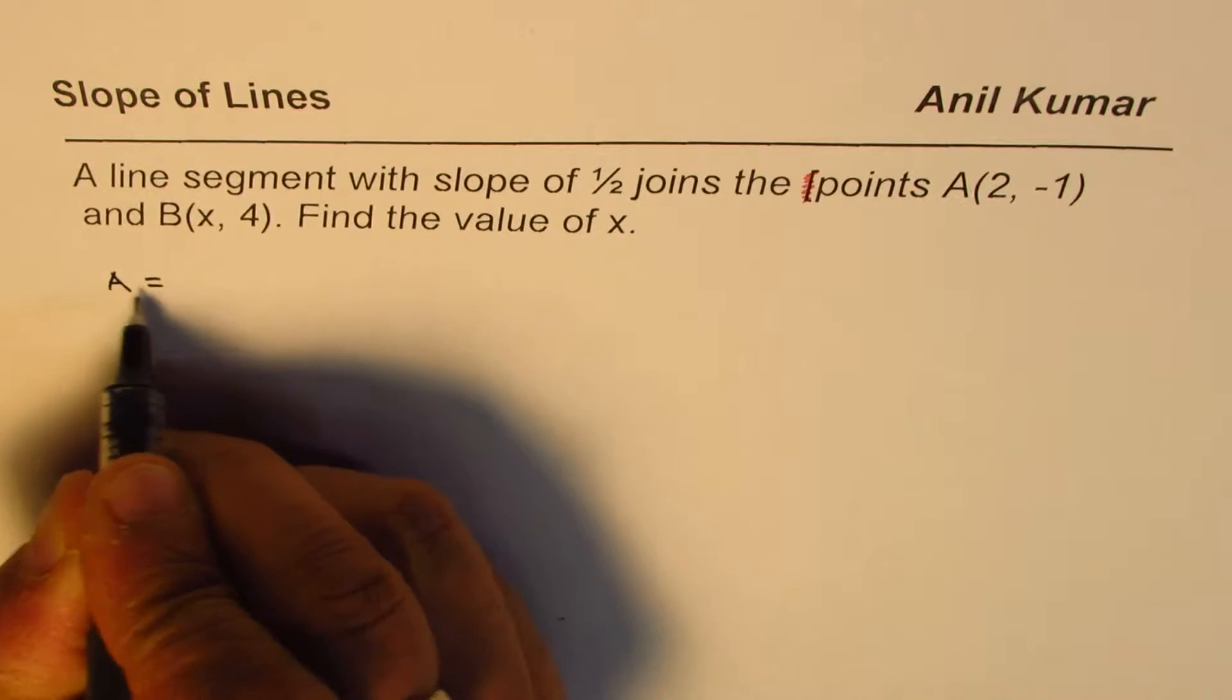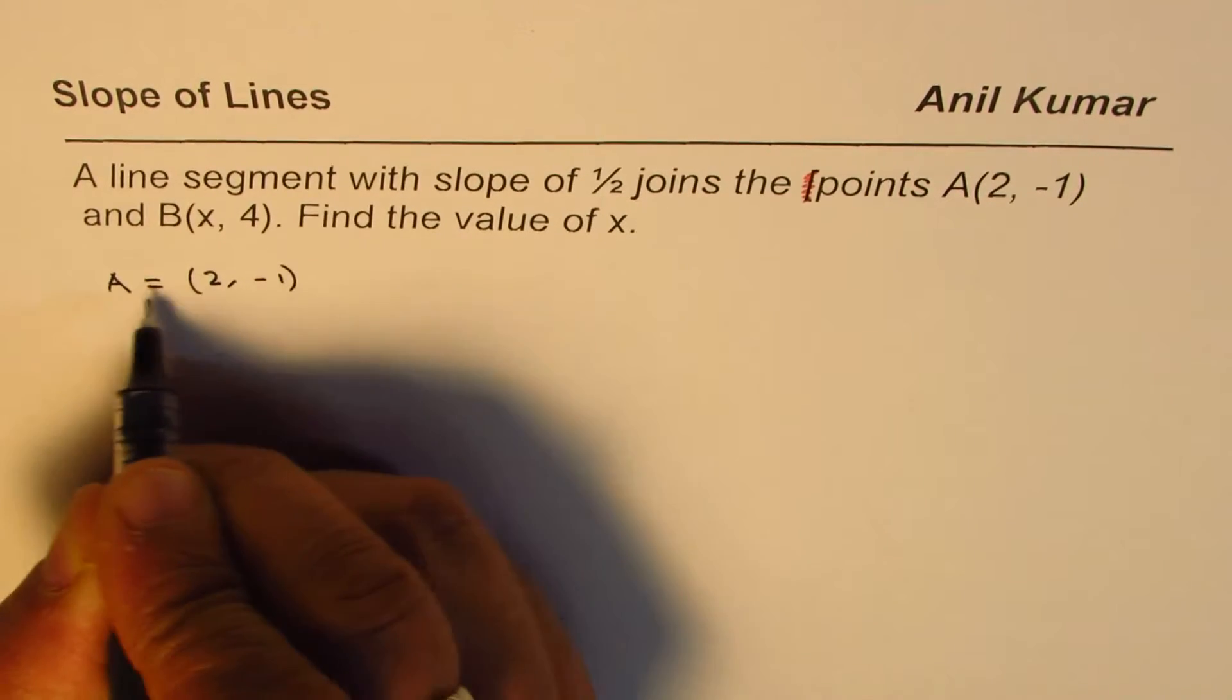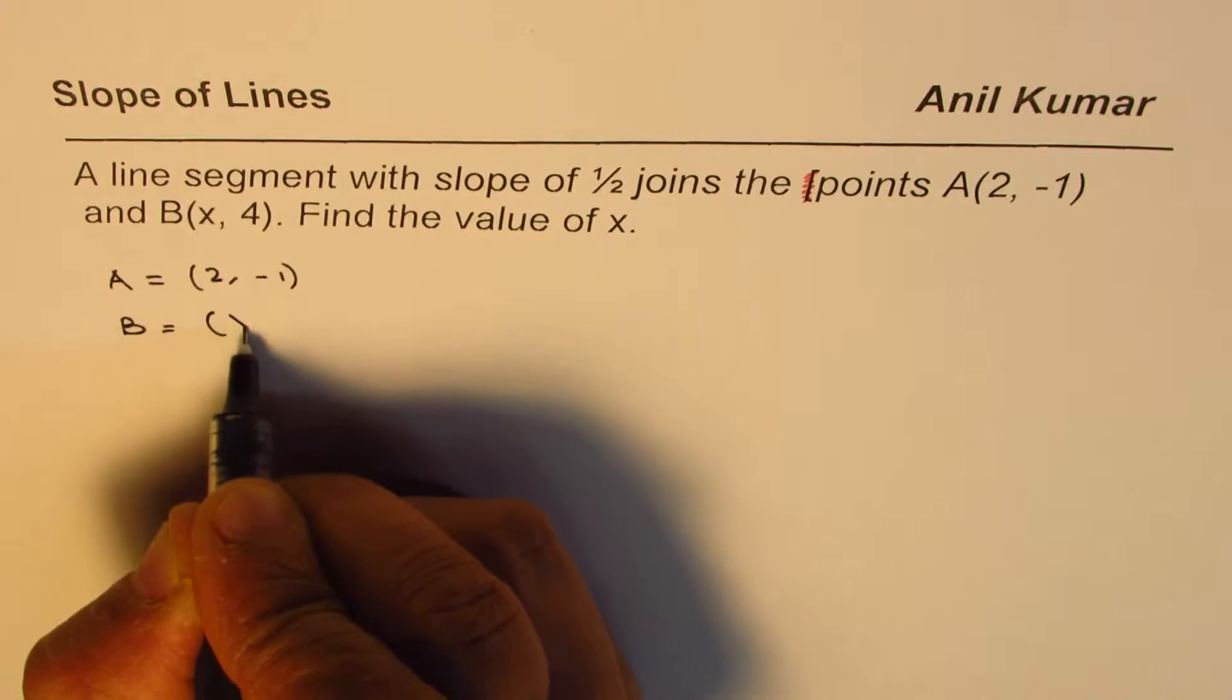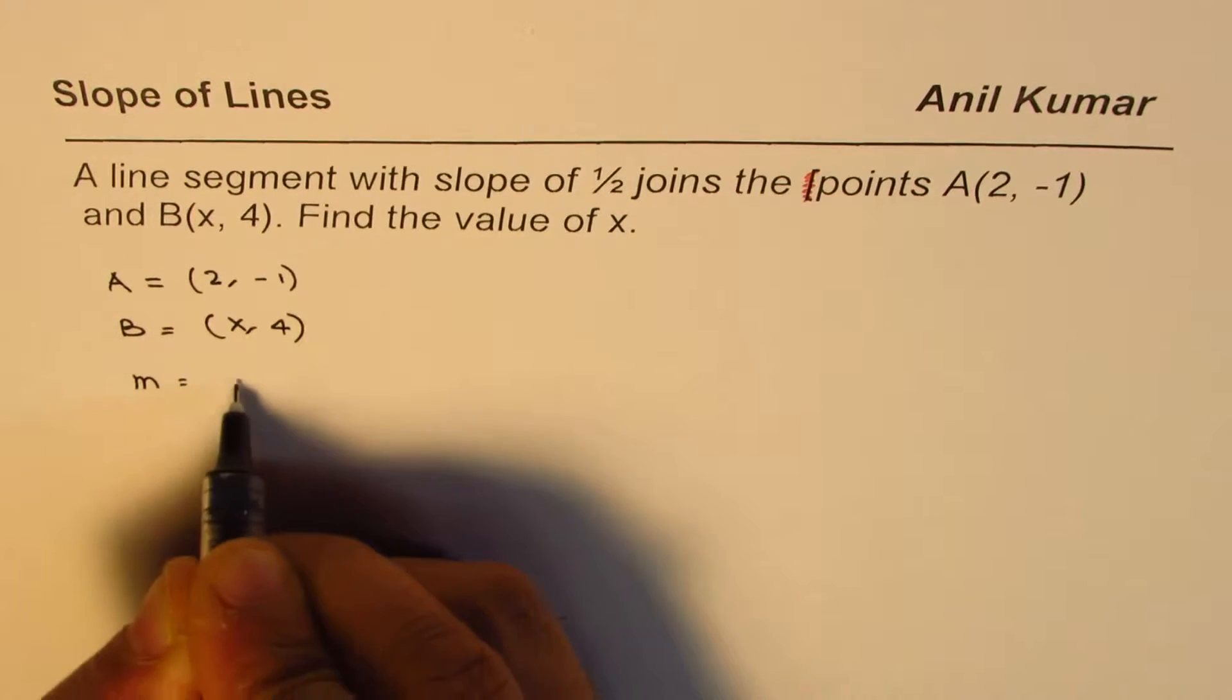So let's write down what is given to us. Point A is (2, -1). Actually, I could write like this also. Let's say point B coordinates are (x, y), and we are given slope of 1/2.